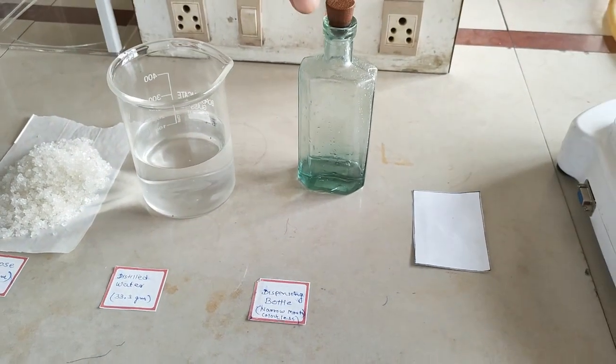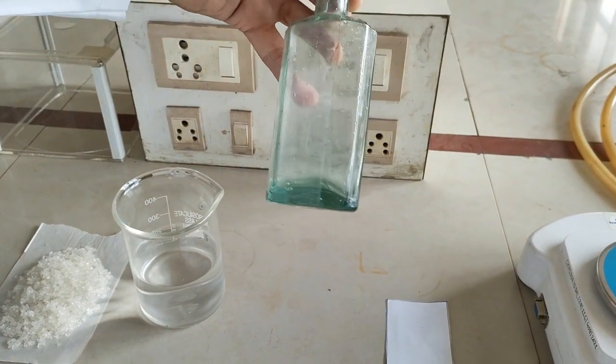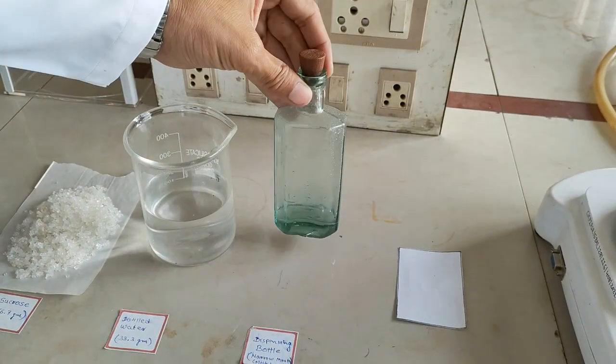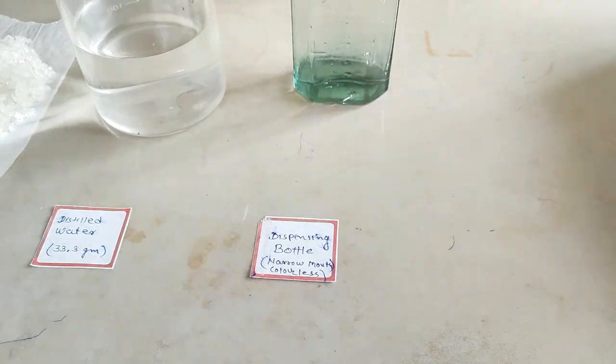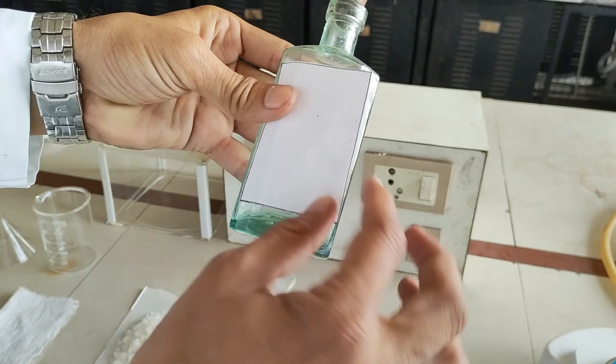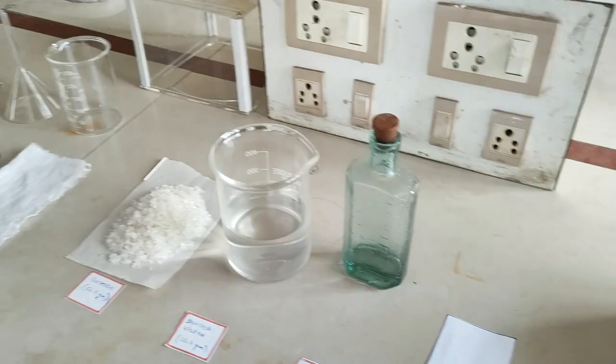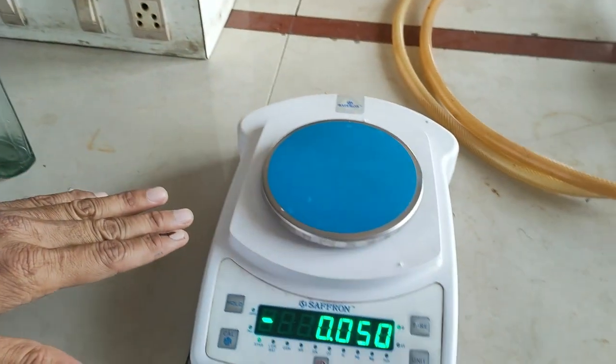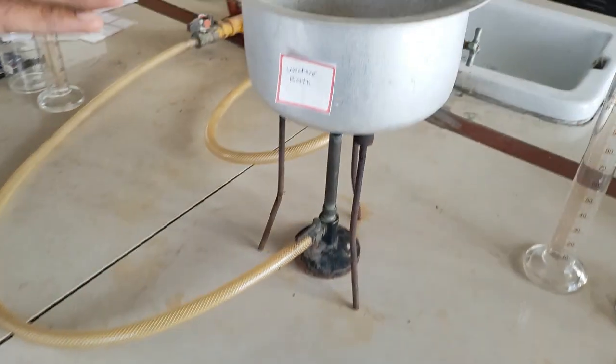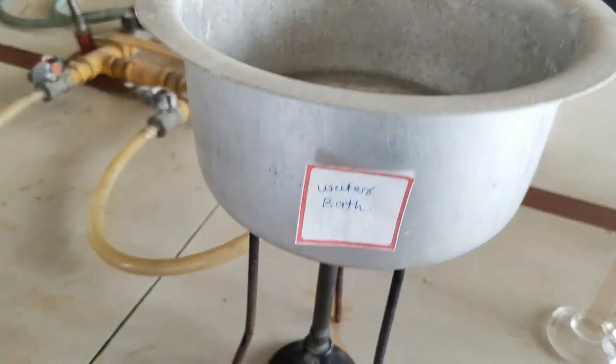After preparation, we are going to fill the simple syrup into a dispensing bottle. This is a narrow mouth colorless dispensing bottle. After filling the preparation inside the bottle, we are going to paste a label with appropriate information as per the standard. We also require a digital weighing balance and a water bath to heat our sugar and water solution.